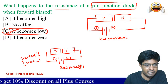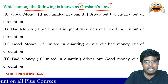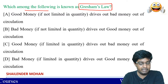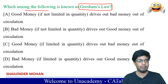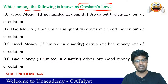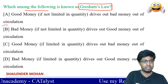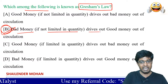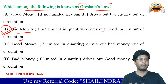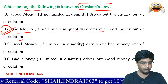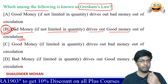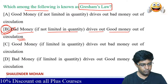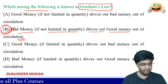Which of the following is known as Gresham's Law? Gresham was the economic advisor of Queen Elizabeth. His law states that bad money — money not earned through hard work — when it comes into high circulation, drives out good money from circulation. The answer is B option: bad money, if not limited in quantity, drives out good money out of circulation. Money earned through hard work is spent more carefully.